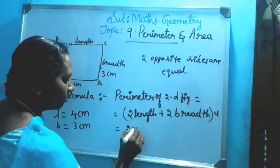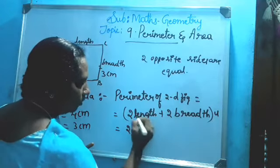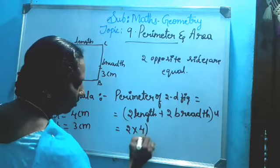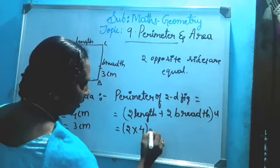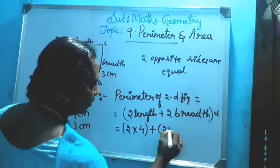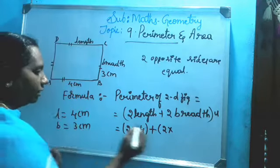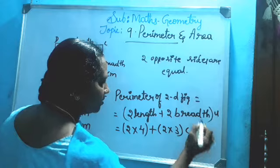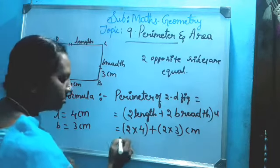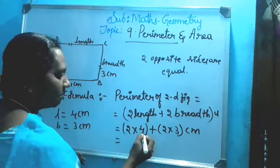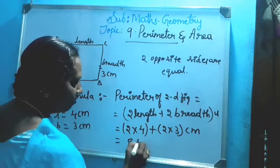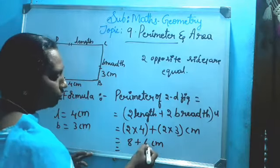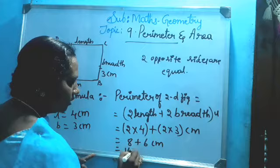Now apply the formula. See: two length, so put length as 4 centimeters in brackets, plus two into breadth - how much? Three centimeters. Again write the unit centimeter.